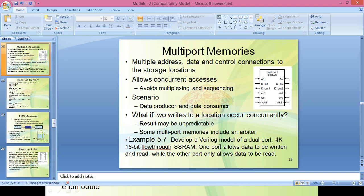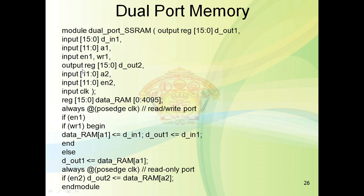For port 2, we define output register [15:0] dout2. The address input is [11:0] A2. Data input and write signals are not required for port 2 because it is a read-only port. Only enable signal en2 is required. One more input required for both ports is the clock.